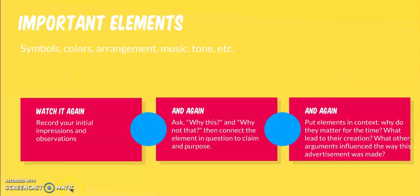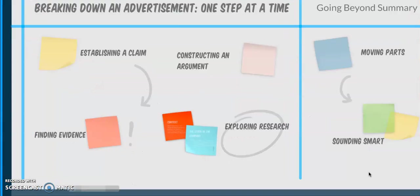On your first few watches I would say to record your initial impressions and observations. Then you start to ask, why this and why not that? Why Robin Williams and that speech from the movie The Dead Poets Society? Why not some other speech? What are they trying to do here? And then connect the element in question to the claim and the purpose of the advertisement. Put elements in context. Why do they matter for the time? What's Apple participating in broadly about the discussions we have about art and technology? What led to the creation of that commercial? And that's where you would start to branch out and look at other things in the form of research.